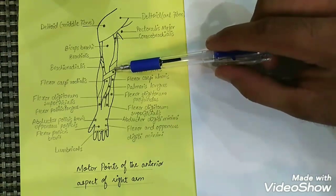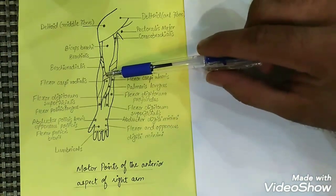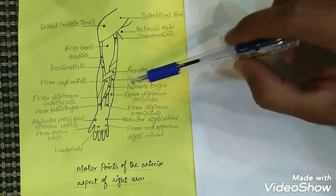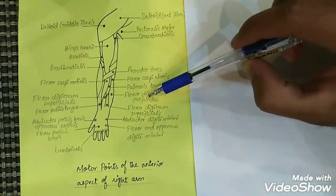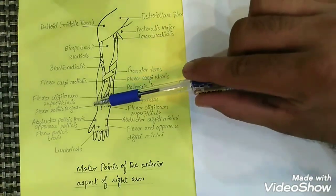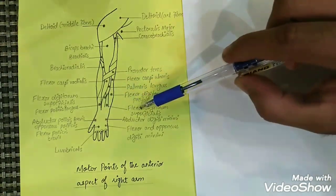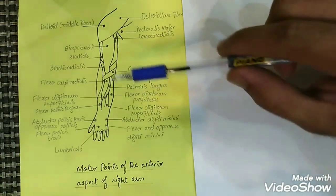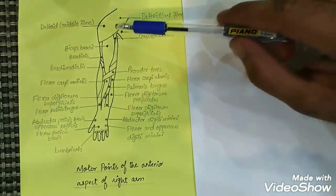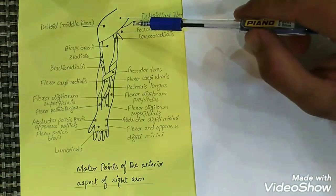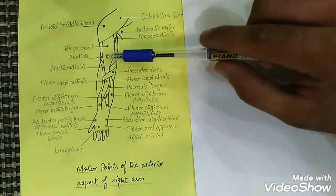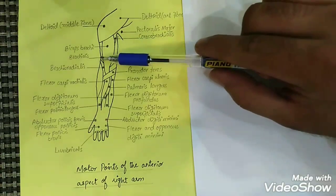Here is the motor point of the pronator teres, the flexor carpi radialis, flexor carpi ulnaris, palmaris longus, flexor digitorum profundus, flexor digitorum superficialis, flexor pollicis longus, and extensor digitorum superficialis. You can see that most of the motor points lie in the belly of the muscle — the biceps, brachialis, flexor carpi radialis, flexor carpi ulnaris, and flexor digitorum superficialis.